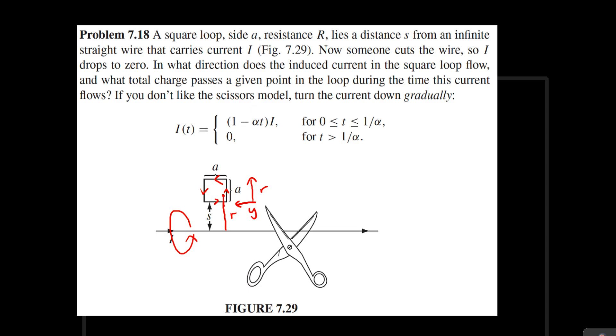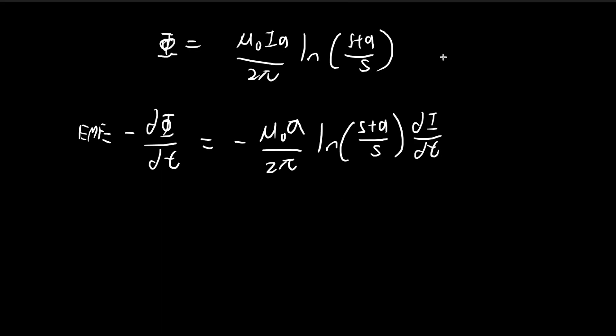And as you've seen, I is equal to (1 - αt) times this I₀ over here. This is a constant. So it's kind of confusing, I'm using I and I₀ over here. So this I₀ over here is the constant. This is the I, the function with respect to t. So if you take dI/dt, all you get is negative αI₀. So the negatives, they cancel out. So we get μ₀aαI₀ divided by 2π natural log (s+a)/s.